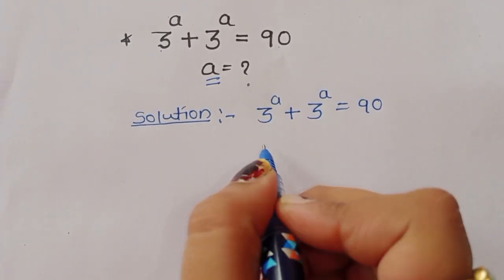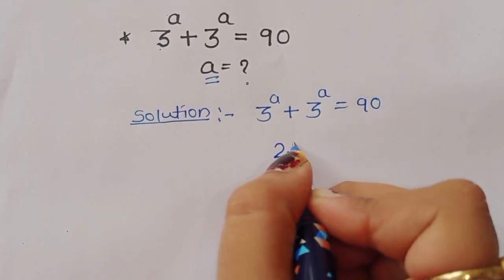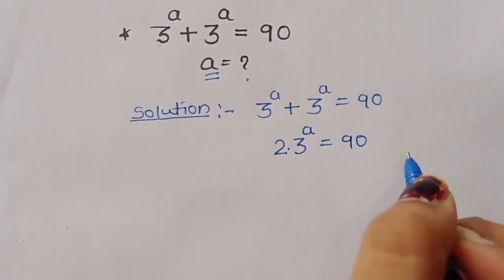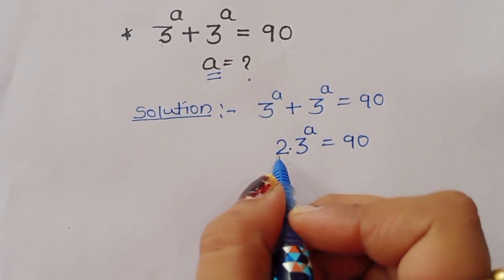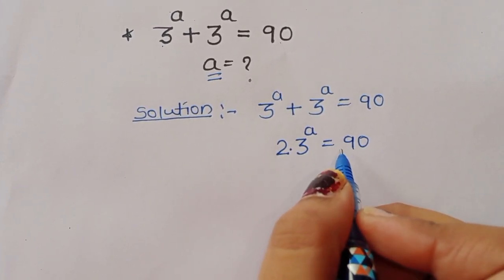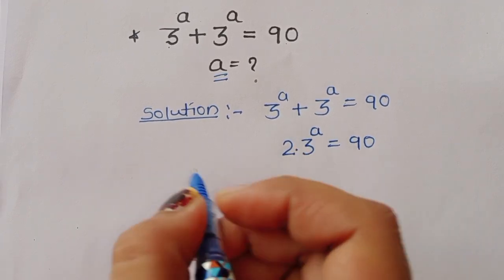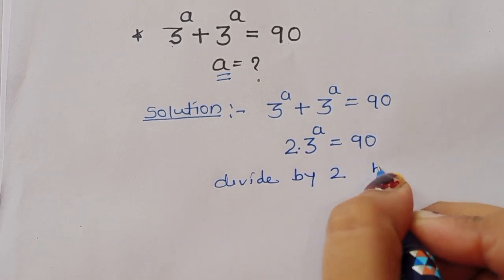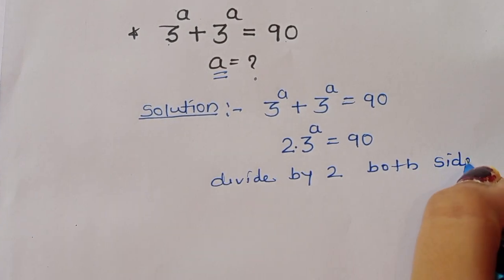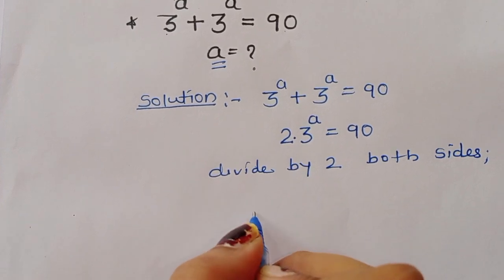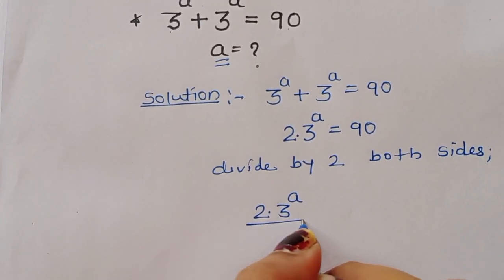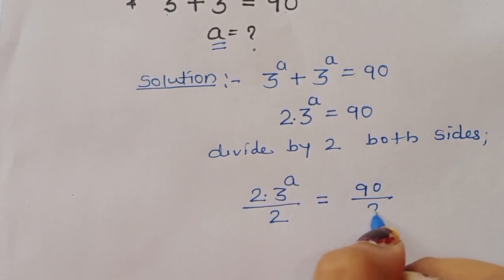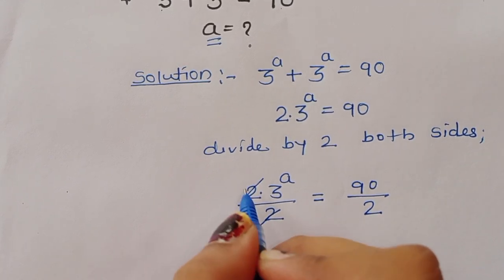We can write this as 2 times 3 power a is equal to 90. Now we divide both sides by 2: 2 times 3 power a divided by 2 is equal to 90 divided by 2. The 2 cancels.